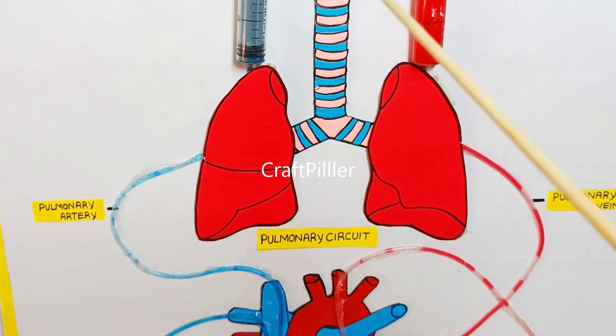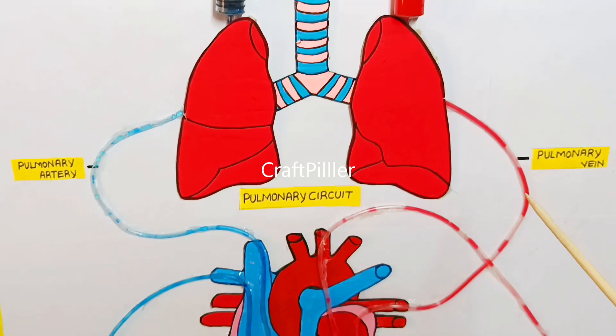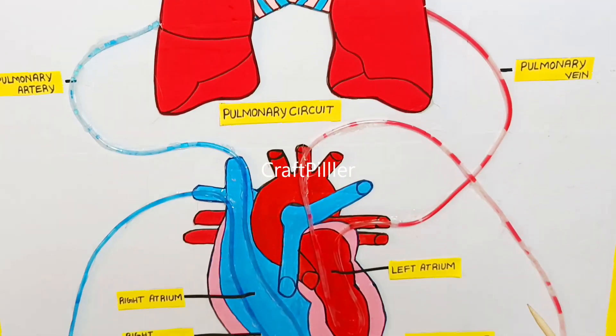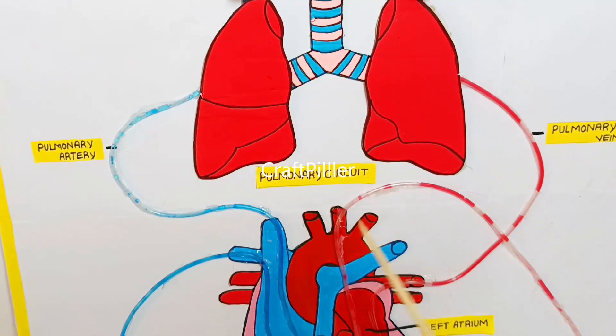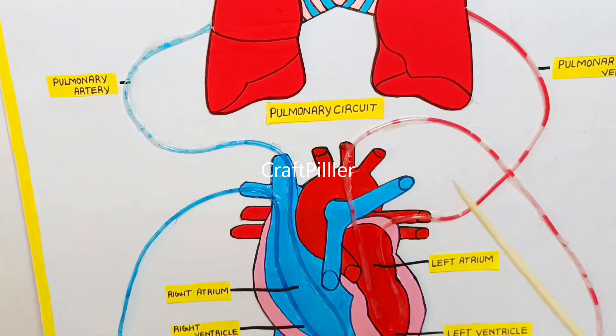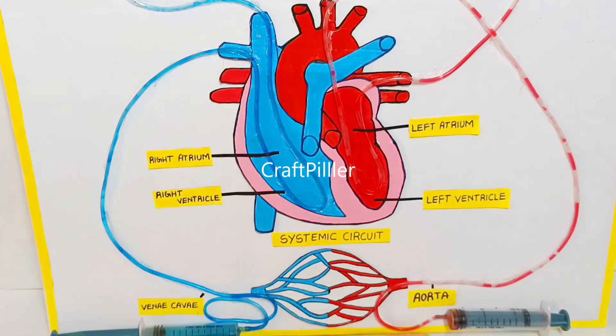From the right ventricle, it is sent again to the pulmonary artery and on to the lungs for oxygenation. This entire process keeps repeating — from lungs to heart, and from heart to various parts of the body.